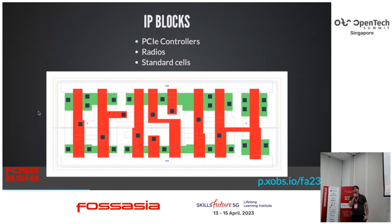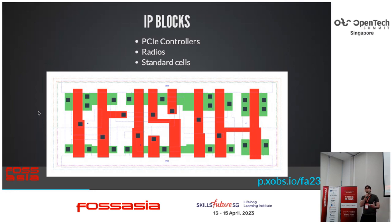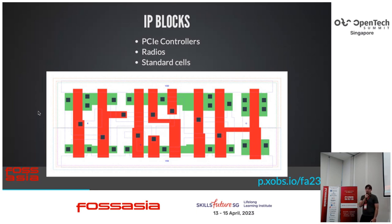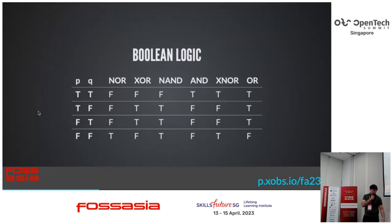An example is a PCI Express controller, which is a really complicated piece of hardware with a lot of timings and configuration. Radios are another example — if you want your chip to have Wi-Fi, you're going to need that tuning from a library vendor who has tested it in the particular country you're working in. And then there are standard cells. These are the tools that most people interact with, although they don't even know it.